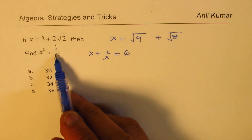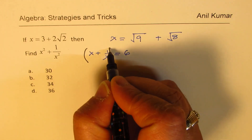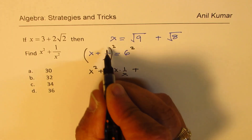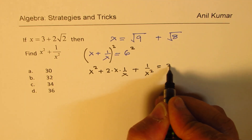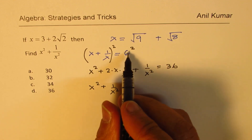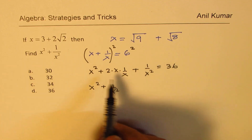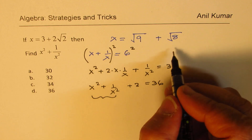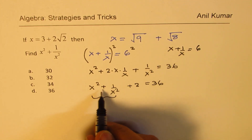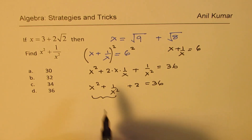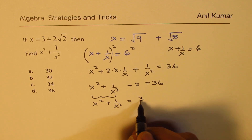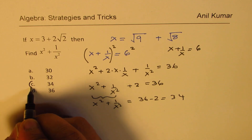We need to find x squared plus 1 over x squared. To get that, we square x plus 1 over x. We get x squared plus 2 times x times (1 over x) plus 1 over x squared equals 36. Simplifying: x squared plus 1 over x squared plus 2 equals 36. Therefore x squared plus 1 over x squared equals 36 minus 2, which is 34. So option C is the right answer. The first step was easy because we know our rule, and then it became simpler to find the further solution.